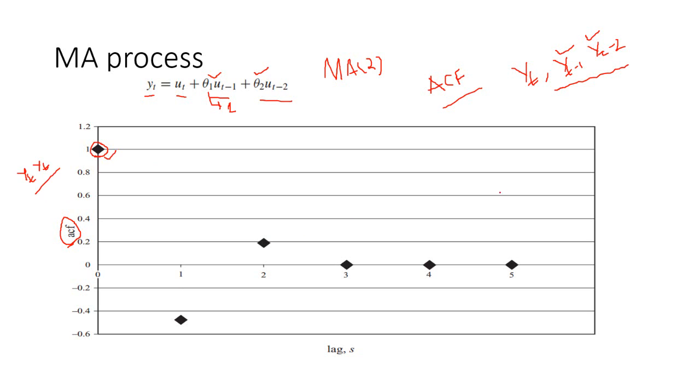Then, with the first lag, yt with yt minus 1, we have a value of minus 0.5. So, theta 1 is the minus 0.5 because the correlation between yt to yt minus 1. And then, the lag 2, correlation between yt and yt minus 2, we have a value of 0.2.